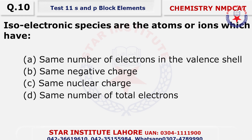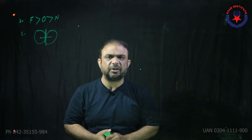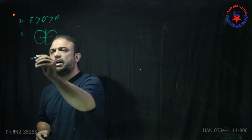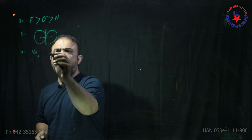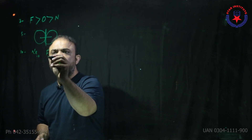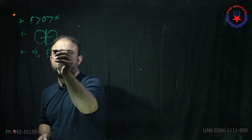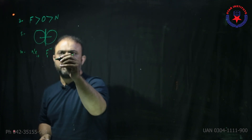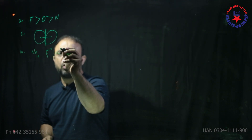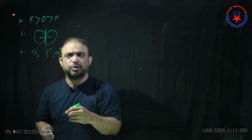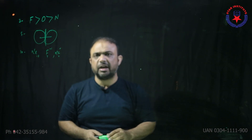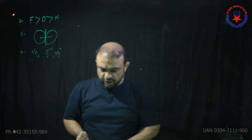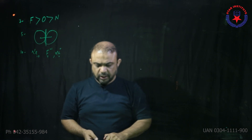Isoelectronic species are atoms or ions which have the same total number of electrons. For example, for neon with atomic number 10 — F⁻¹ has nine electrons but minus one means one is added. Na⁺¹ also is isoelectronic because its atomic number is 11, so one electron has left, giving it ten electrons as well. So isoelectronic means having the same total number of electrons. The choice is D.